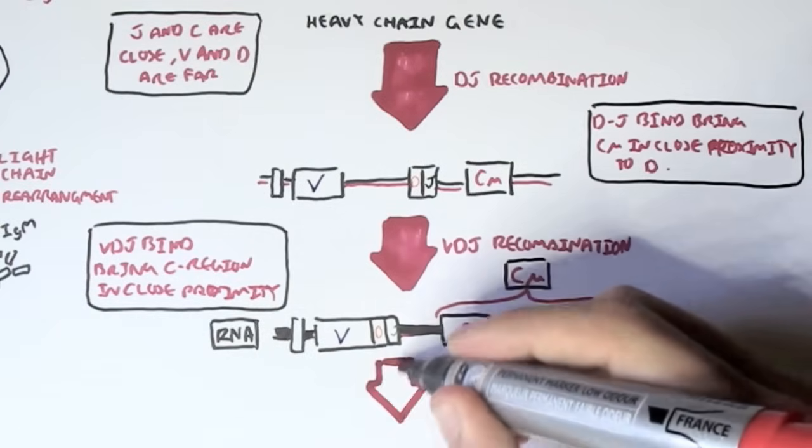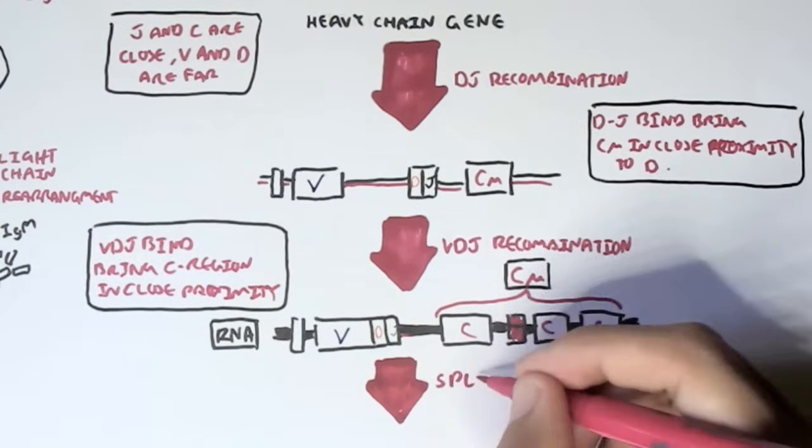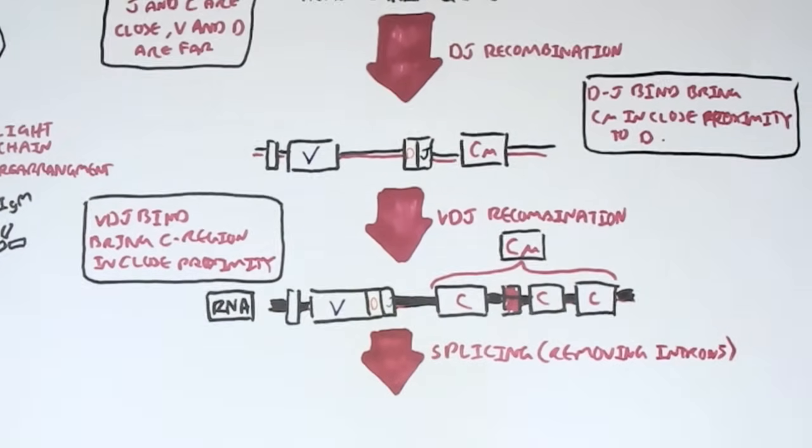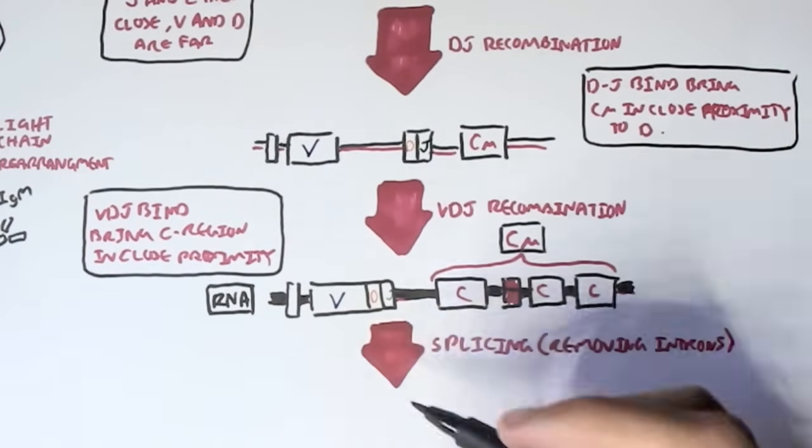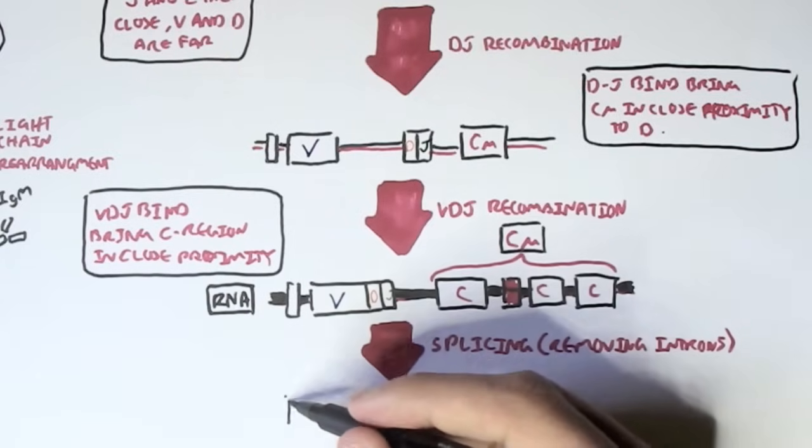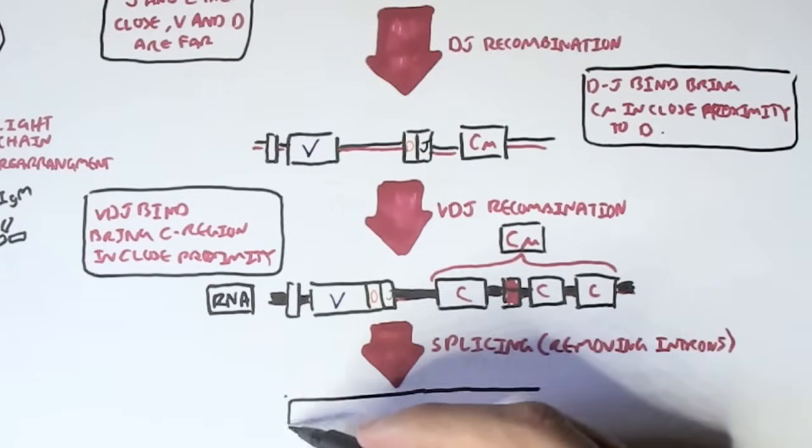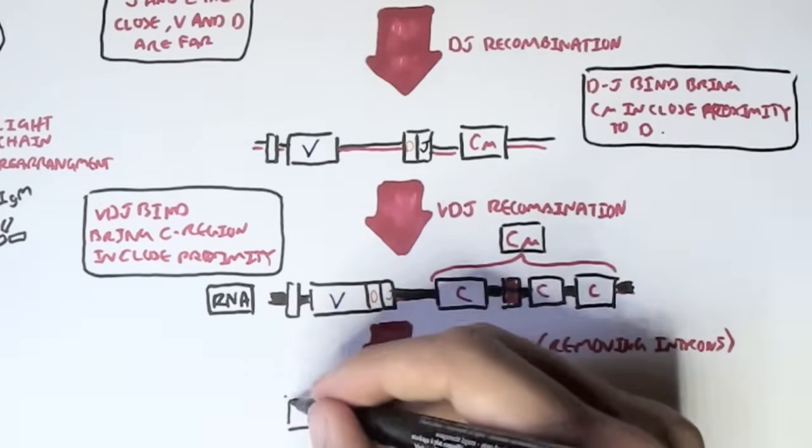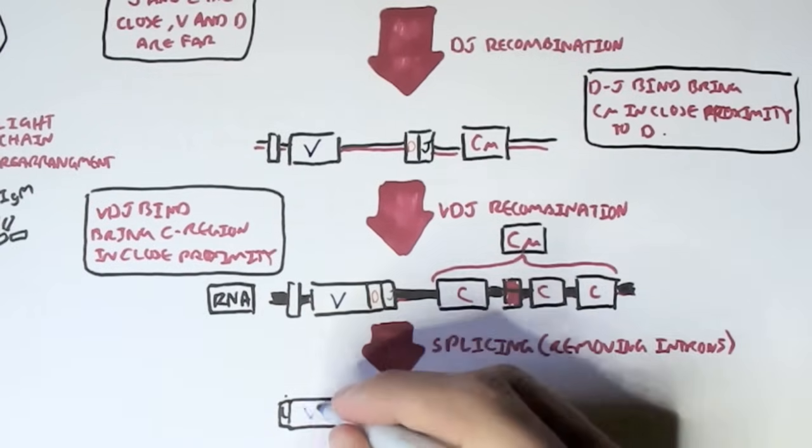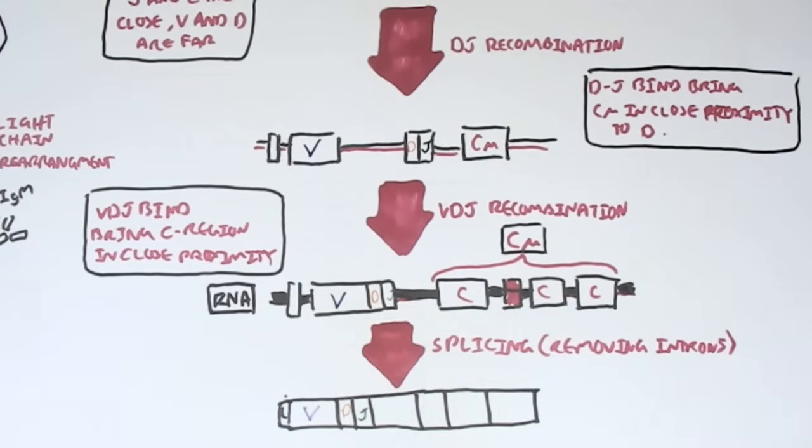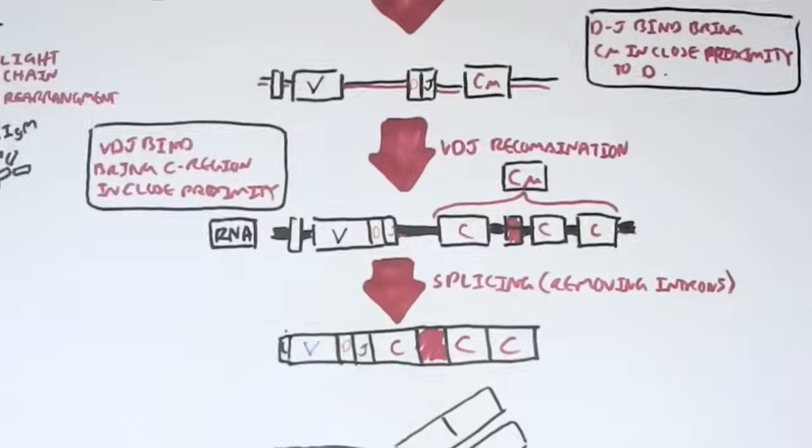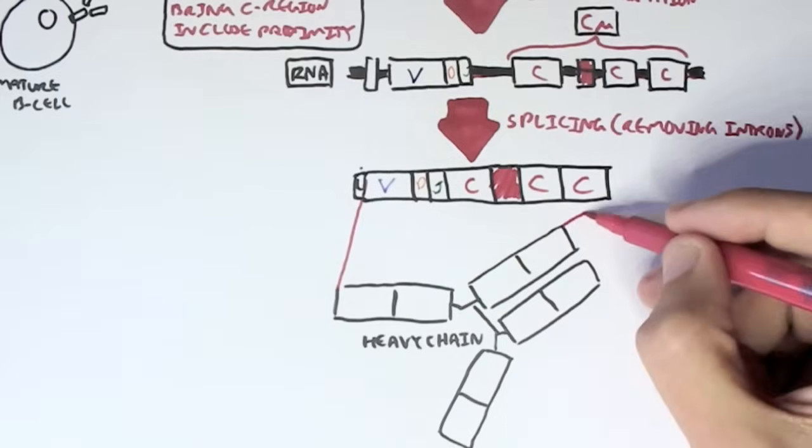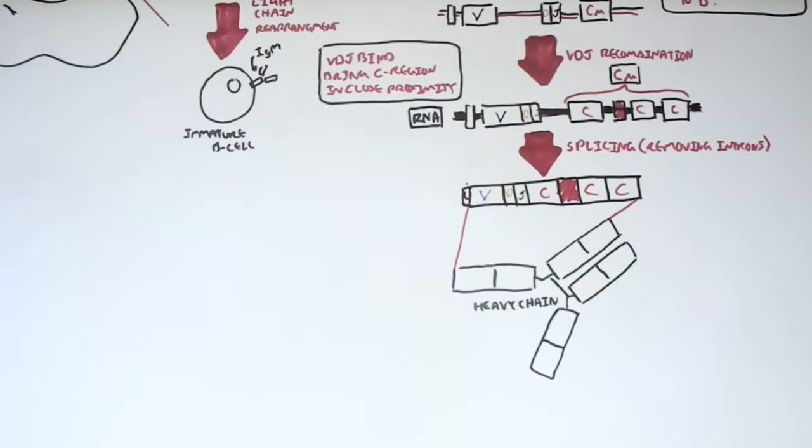Following V, D, J recombination, this will actually transcribe for an RNA. So this whole sequence now of V, D, J and constant is an RNA. And because it's an RNA, we still have introns, and from splicing, this will remove the introns within that particular gene. And then once the introns are removed, it will become mRNA, which will then make protein. And now this is essentially the protein for the heavy chain of the antibody.